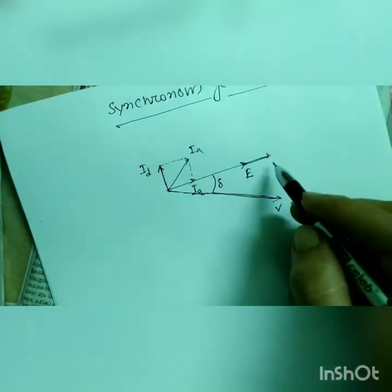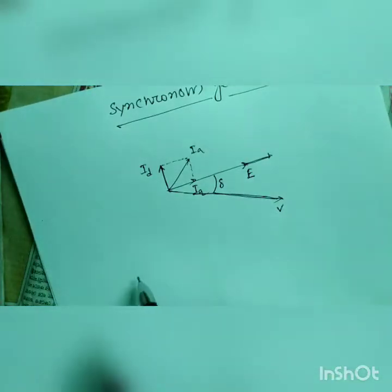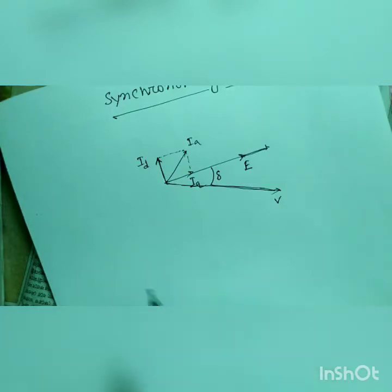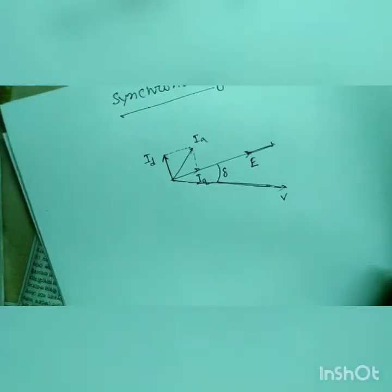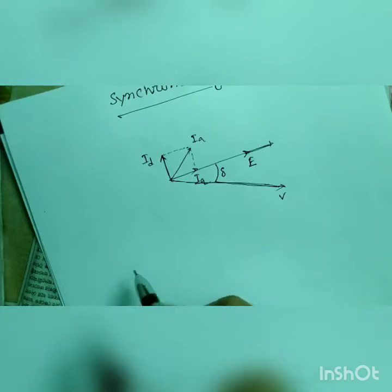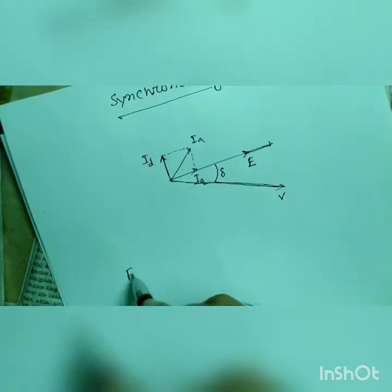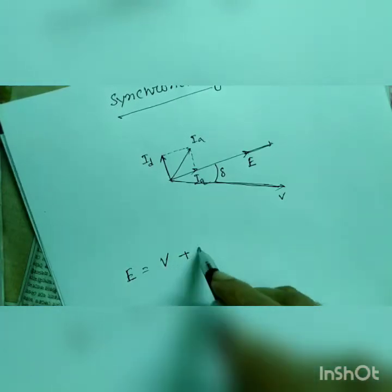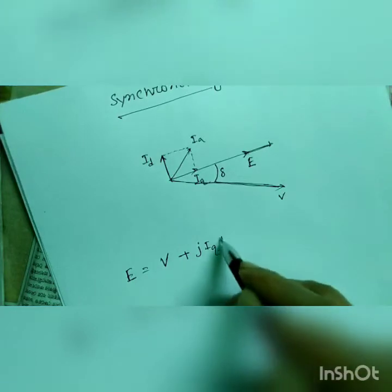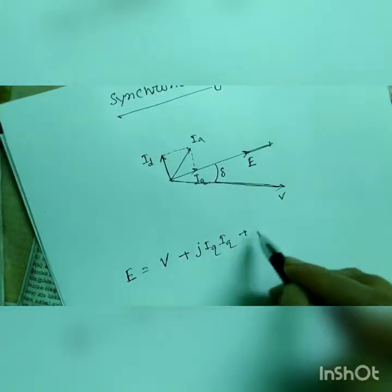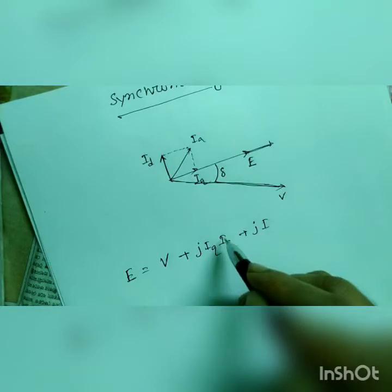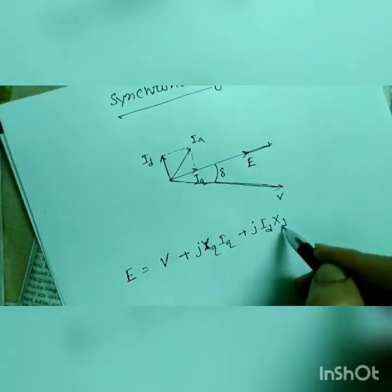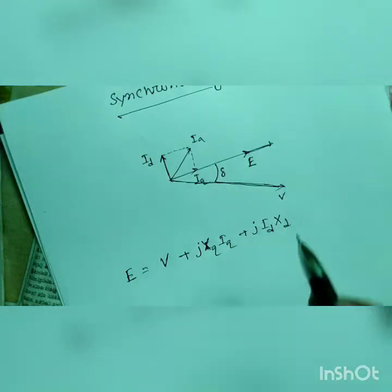You can draw it easily if you write the KVL equation of alternator. So let's write the KVL equation of alternator. So E is V plus J of IQ xq plus J of xq id xd.